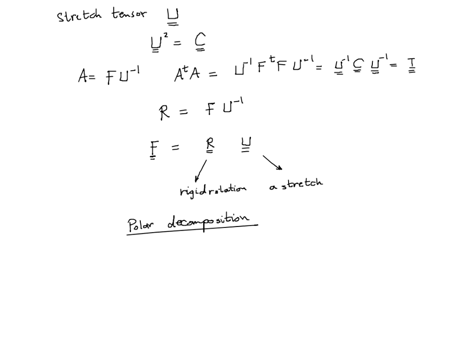Since the deformation gradient itself is I plus H, where H is the displacement gradient, we can write I plus H equals R times U. If we know the displacement, we can compute the displacement gradient, and from there we can compute R and U. Once we have R and U, we know the principal stretches — the amount the material stretched — and we know how much the material rigidly rotated.